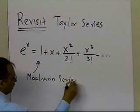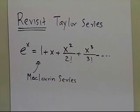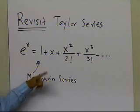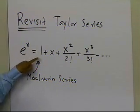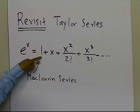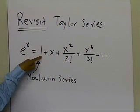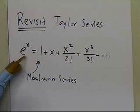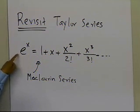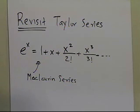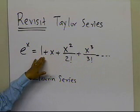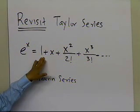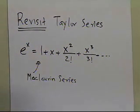A McLaurin series is a special case of a Taylor series. This expansion of e to the power of x is written in terms of a series which involves only simple addition, division, subtraction, and multiplication. It doesn't involve any transcendental, exponential, or trigonometric functions — the calculation of e to the power of x simply involves the basic arithmetic operations available in a computer: multiplication, addition, division, and subtraction.